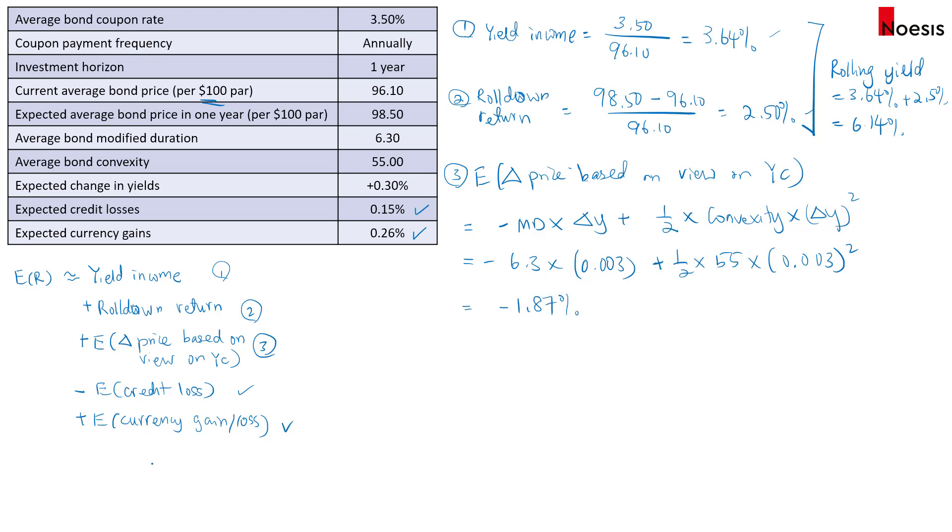So we now substitute all this into the formula. So the expected return on the US corporate bonds will be 3.64% yield income plus the rolldown return of 2.5%. Then we add in the expected change in price based on the view on yield curve that's negative 1.87%.